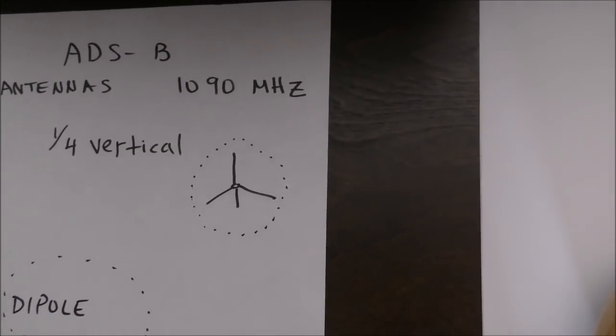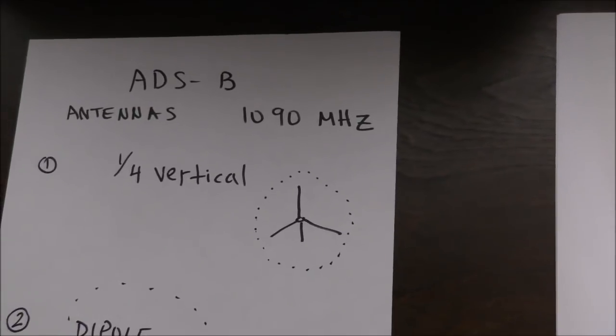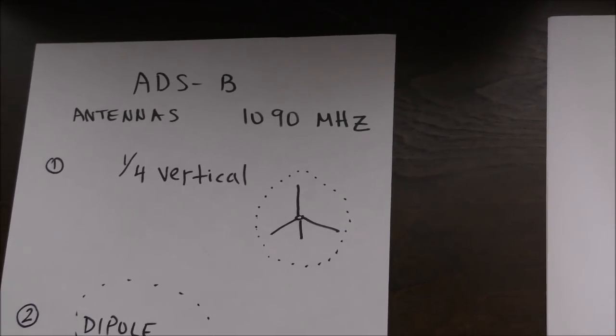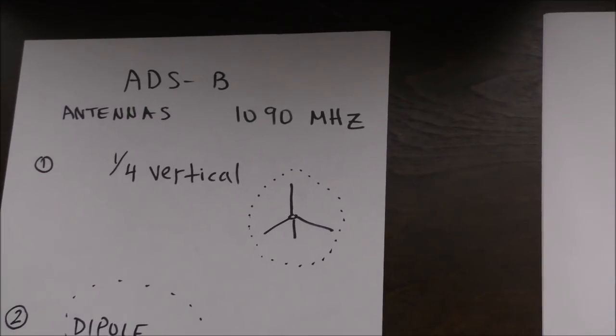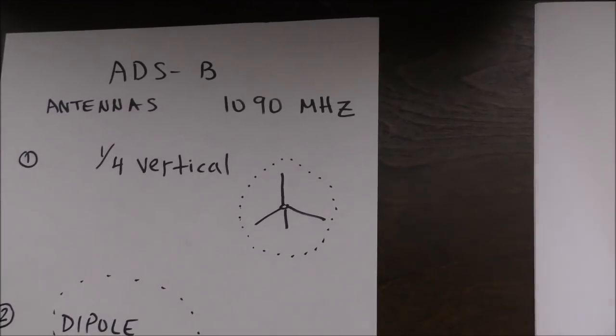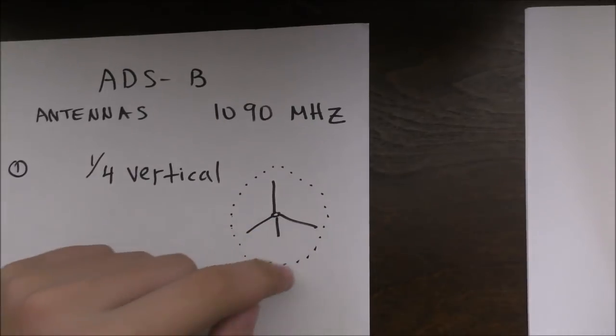So, before we get started, just a few quick words about antenna patterns. These patterns determine an antenna sensitivity and where it can get its signals. The most simple is the quarter wave vertical. It takes signals from a sphere all around.